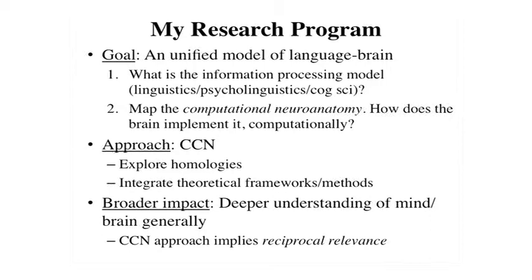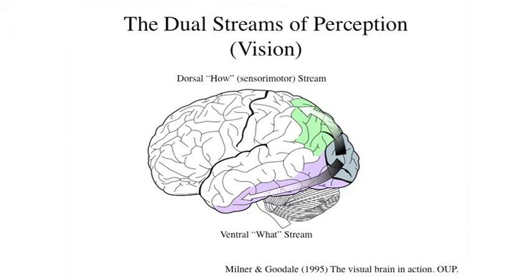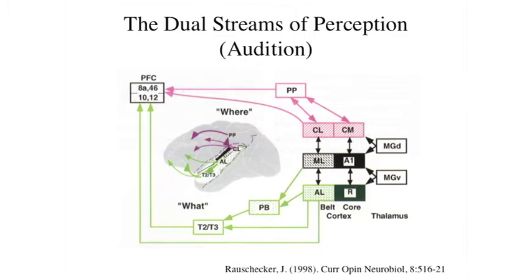Here's the broad framework. It's fairly well established that the visual system is organized into two broad streams: a ventral 'what' stream involved in identifying objects, and a dorsal stream — sometimes called the 'how' stream — a sensory-motor stream that uses visual information to guide movements to interact with objects. Those are two different kinds of functions, and this organization is fairly well established in vision.